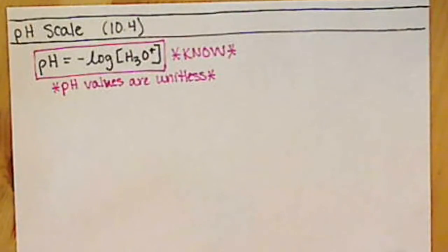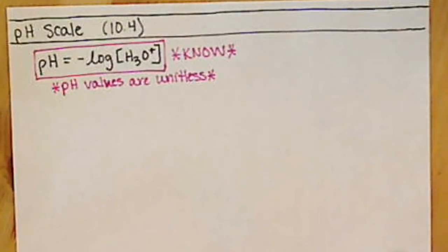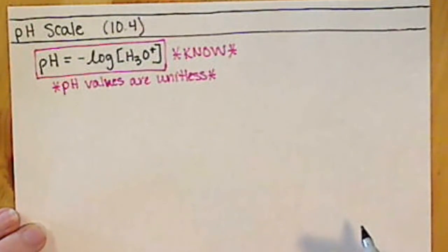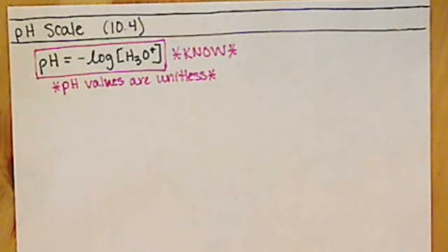With our acids and bases, we're going to be dealing with concentrations ranging from around 10 to the negative 1, all the way down to things like 10 to the negative 14. That's a really, really big range of very, very small concentrations.